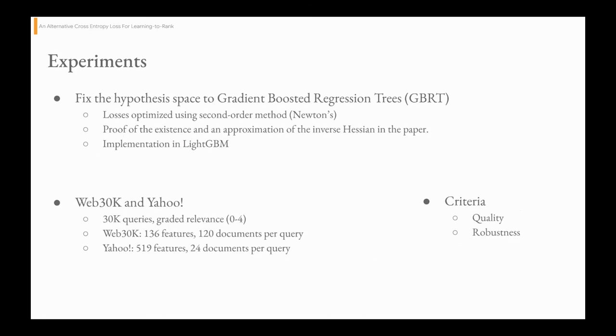In our experiments, in order to enable a fair comparison between the various methods, we're going to fix the hypothesis space to gradient boosted regression trees. We will use the same optimization procedure, and in fact, the implementation will be in the same framework in LightGBM, where we have a state-of-the-art implementation of LambdaMART that enables us to evaluate these methods only in terms of the impact of the loss function itself on ranking quality.